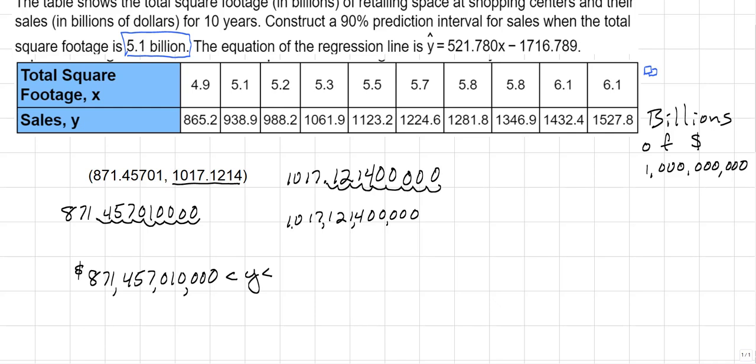And then I'm going to put in my commas to represent my number. And we'll note that it's going to be in dollars. And that's going to be read as $1,017,121,400,000. And obviously I could put .00, but I don't need to in this particular instance. And this is your prediction interval.